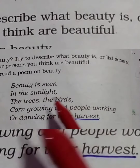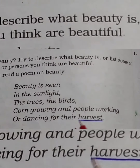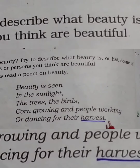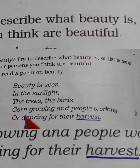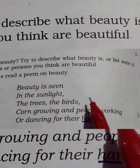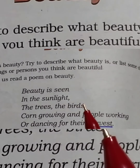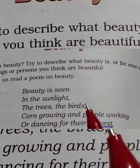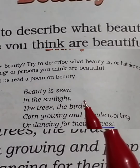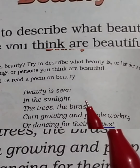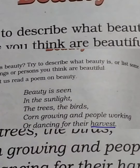Beauty is seen in the sunlight, the trees, the birds, corn growing, and people walking or dancing for their harvest. The meaning of harvest is the time of the year when the crop is ready. Corn is a cereal crop. In the first stanza, the poet says she can see beauty in the sun rays when the sun rises or sets, in the trees, and in the movement of birds. She also sees beauty in the happiness on the faces of farmers when they work hard day and night, and in the joyful dancing for their harvest.